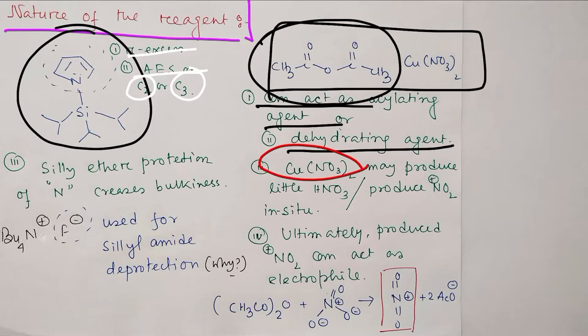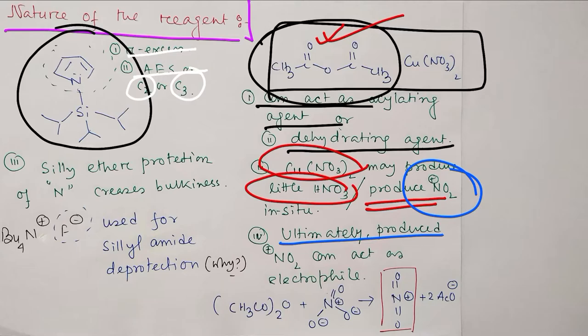In presence of moisture, copper nitrate can produce nitric acid. This nitric acid can undergo dehydration in presence of acetic anhydride to produce the electrophile NO2+ and ultimately produce nitronium acetate.